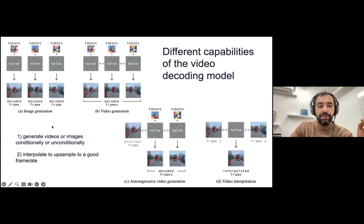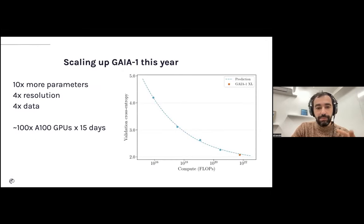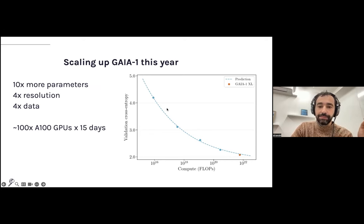The video decoder uses a diffusion process to generate realistic images. It ended up with several functionalities: not only decoding frames from tokens and generating videos, but also video upsampling, interpolation, and autoregressive video generation. Our world model runs at 6.25 Hz, but with this powerful decoder we can generate 25 Hz frame-rate videos. One big recipe for success was scaling it up dramatically over the last year — we observed scaling curves clearly showing the more data and compute you put in, the better the behavior.